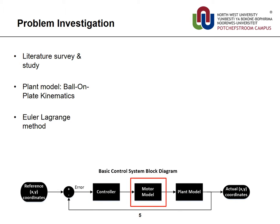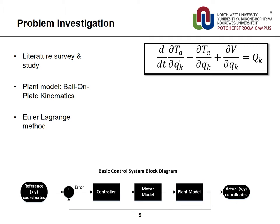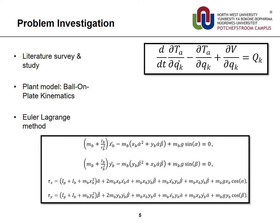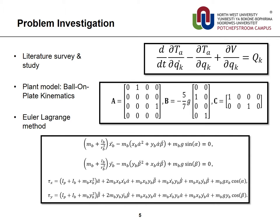The motor model requires a Stewart platform inverse kinematics design, and the plant model requires a mathematical model of the ball and the plate, which was modeled using the Euler-Lagrange method. This equates the ball and the plate's potential and kinetic energy to enable the design of mathematical models relating the plate inclination to the ball's position. After linearizing these equations, a state space matrix was obtained.